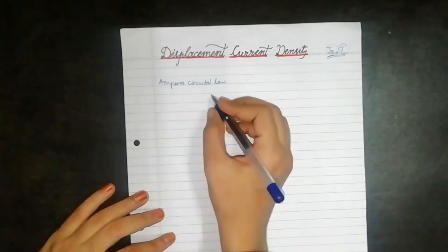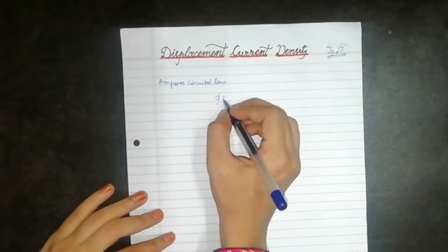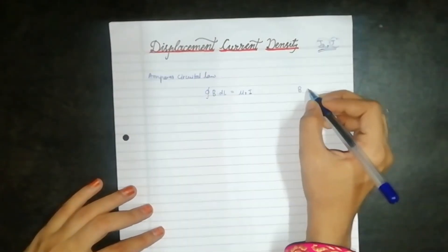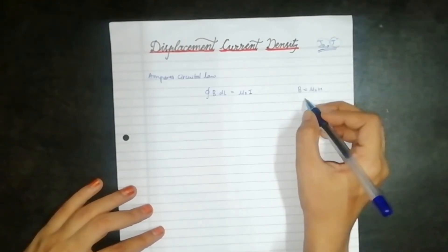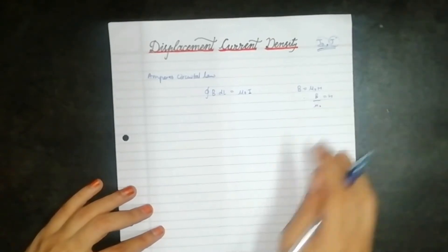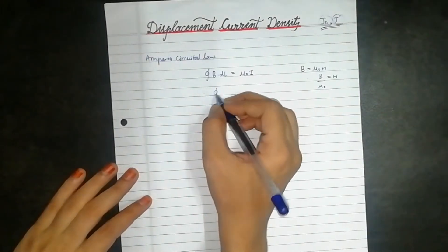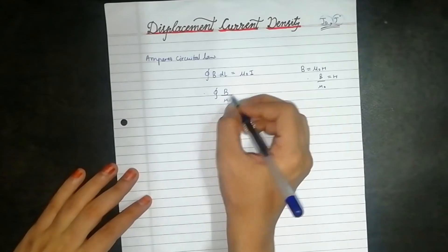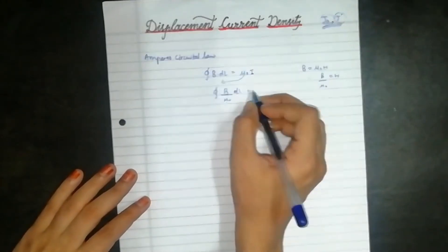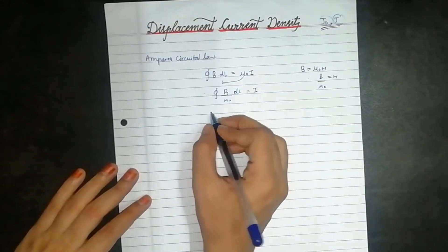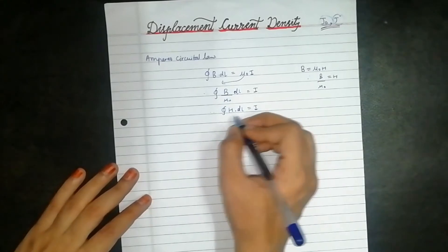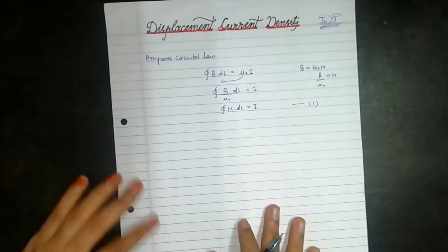Ampere's circuital law is given as the integral of B·dl is equal to μ₀·I. Now, B = μ₀·H, so B/μ₀ = H. Therefore the integral of (B/μ₀)·dl equals I, which leads us to the line integral H·dl = I. Put this as equation number one.